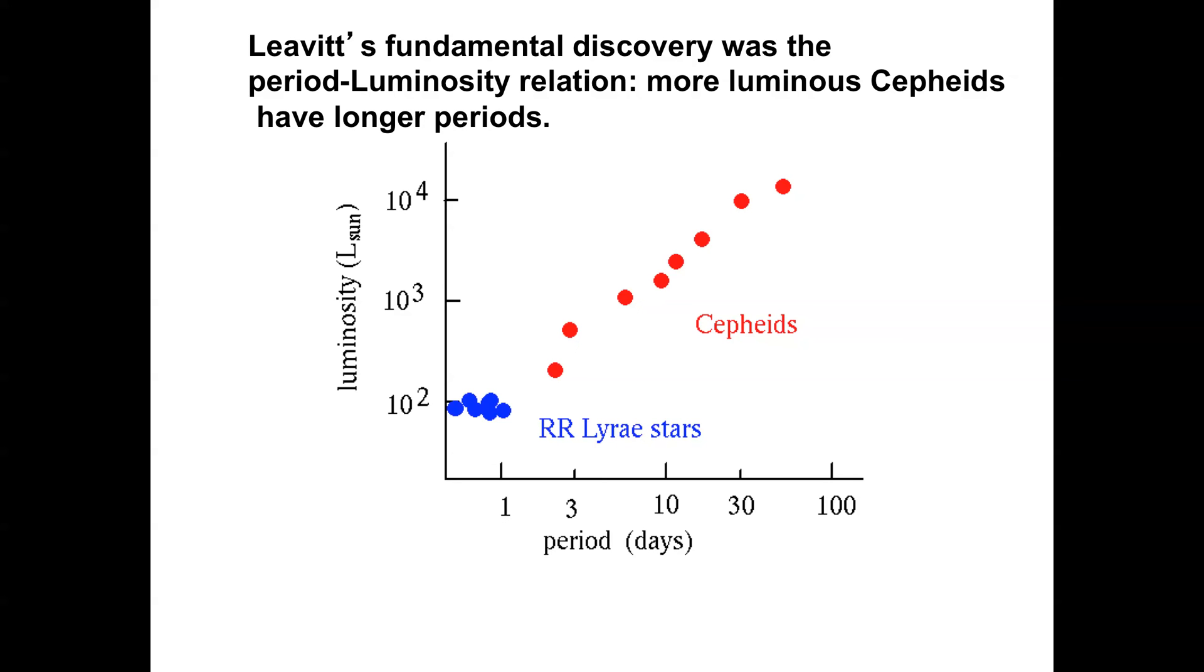And what Leavitt's fundamental discovery was, was this. She observed many, many variables by looking at photographic plates taken one night after the next and looking for variables by comparing the plates one to the next and seeing which stars changed in brightness and which ones didn't. And she noticed a very remarkable pattern, that the more luminous the stars were, the longer the period of their variation from bright to faint and back to bright was. This is called a period-luminosity relation. And what this acts as is essentially a little label on the forehead of each star saying I am a 10 to the 4th solar luminosity star or I am a 10 to the 3rd solar luminosity star. So you measure the period of the star, that period tells you how luminous it is. Then if you measure its flux, that gives you an indication of distance. Voila.